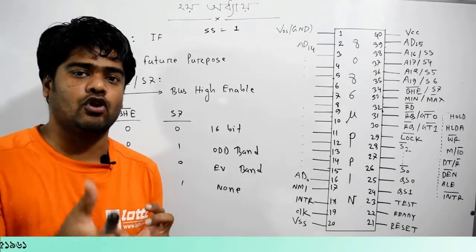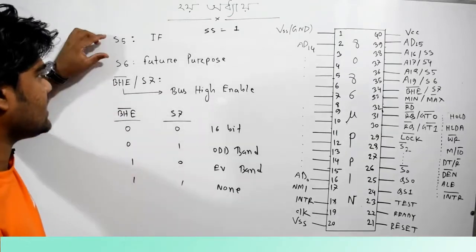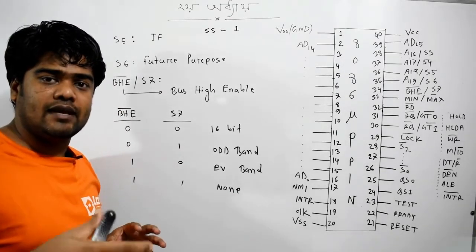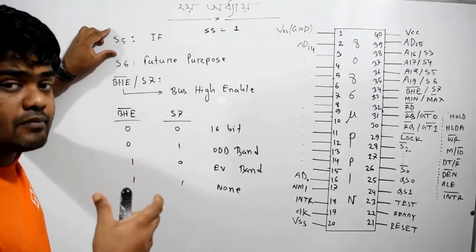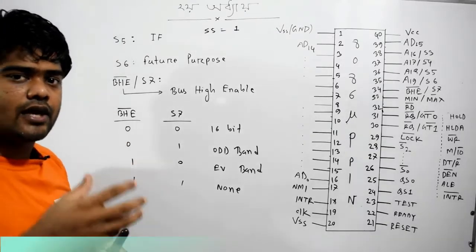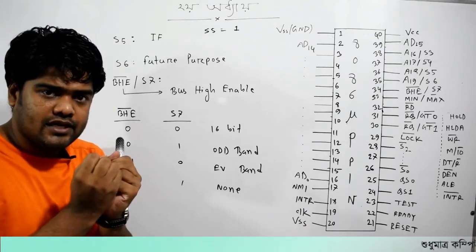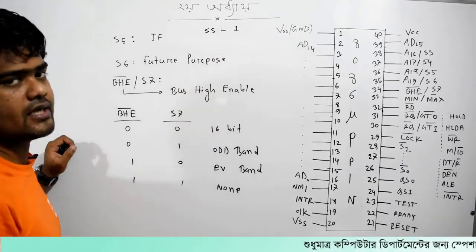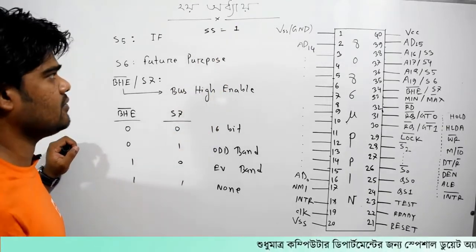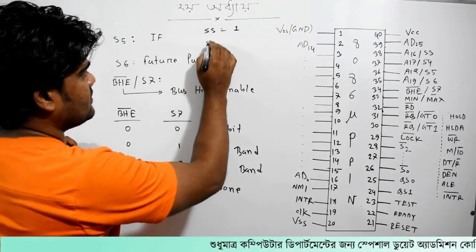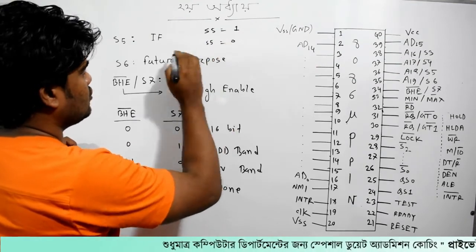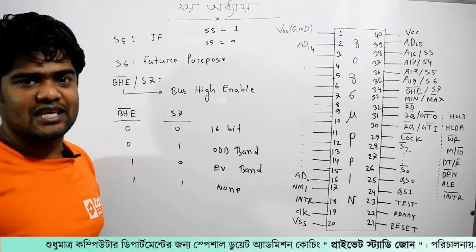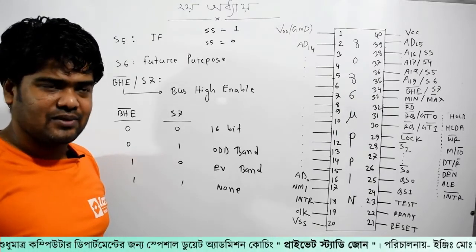This is the first line. If you have a set, S5 is equal to 1, then interrupts will be set. If S5 is 0, then interrupts will not be set. If you have a set, the interrupts will be set. This is not the same.